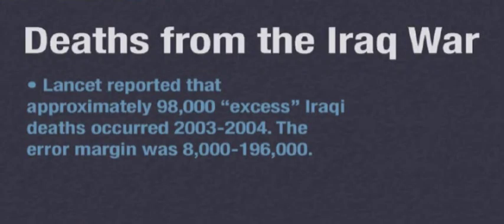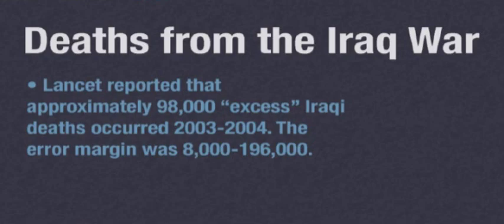Now I want to talk about something very political — the role of science in political discussion. This has to do with the deaths from the Iraqi war. Some of you know that a few years ago, the Lancet did some reports on the number of Iraqi people who were killed after the U.S. invasion. I want to talk about the report published in 2004 about deaths that occurred between 2003 and 2004. The Lancet came out with a report considered quite controversial that approximately 98,000 excess deaths occurred compared to how many would have died had there not been a war, with an error margin putting the true value between 8,000 and 196,000.